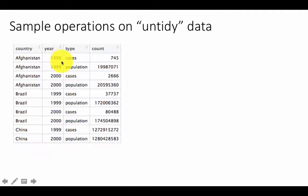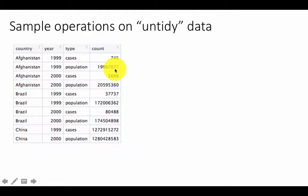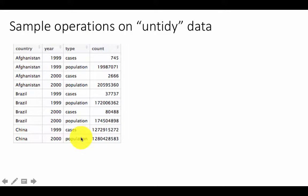So we have got country, year, cases — 745 cases, country, year, population. So cases, population, cases, population — that is repeating down here. So what should have been columns have now become data values within cells.